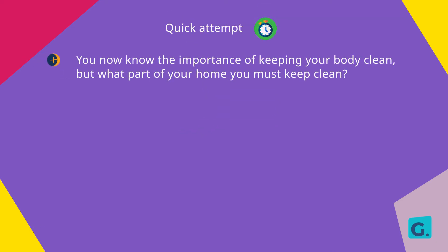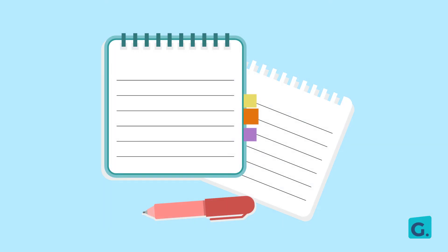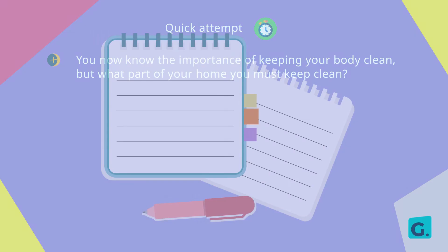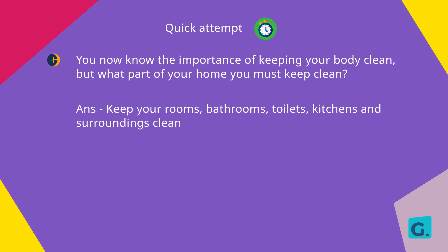Now, you know that keeping your body clean is essential to sanitation. But what parts of the home must you keep clean? Pause the video and write down as many as you can. You should keep your rooms, bathrooms, toilets, kitchens and surroundings clean.